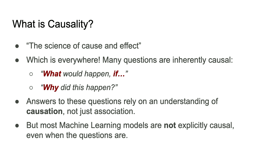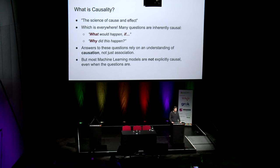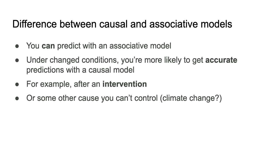Most of the machine learning models that you'll encounter are not explicitly causal, even when they're trying to address causal questions. One thing I often encounter is the question: can't you do predictions with an associative model? And it's true, you can — that's one of their core capabilities. But what's different is that with a causal model, you're more likely to get accurate answers when you're asking questions in a changed context. So if the statistics of the data you're using the model in change for some reason, that difference can disrupt an associative model. But hopefully a causal model will be able to handle those disruptions. For example, if you're going to make an intervention — a change to the system — that's going to change the statistics, and a causal model would be preferable.